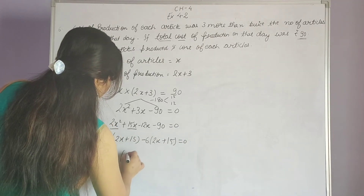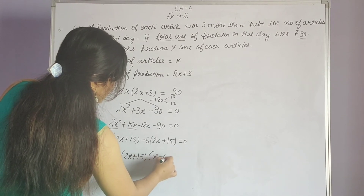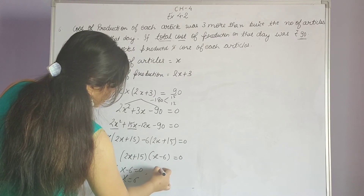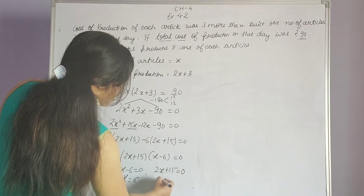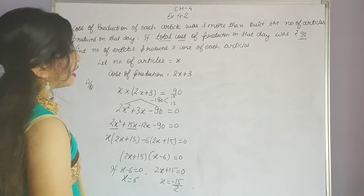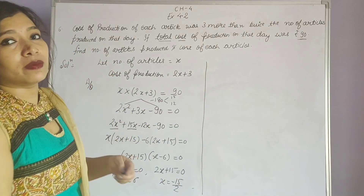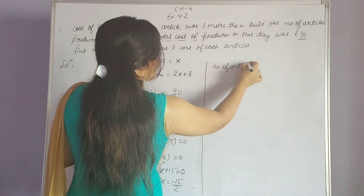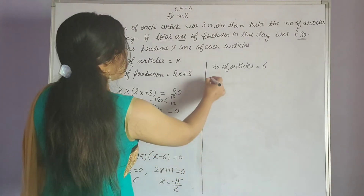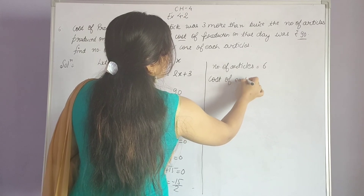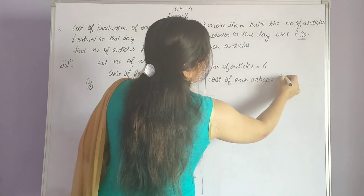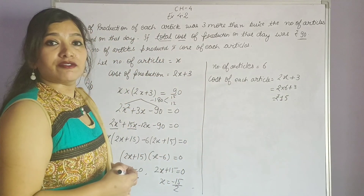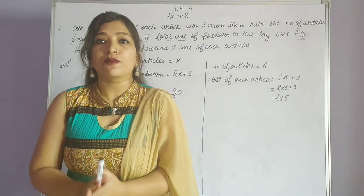You can see: the first bracket is 2x plus 15 and the second bracket is x minus 6, equal to 0. If you equate x minus 6 to 0, x equals 6. If you equate 2x plus 15 to 0, x equals minus 15 upon 2 — which is not a valid answer because the number of articles cannot be negative. So the number of articles is 6. Cost of each article is 2x plus 3: 2 into 6 plus 3 equals 15. So the cost of each article is 15 rupees.